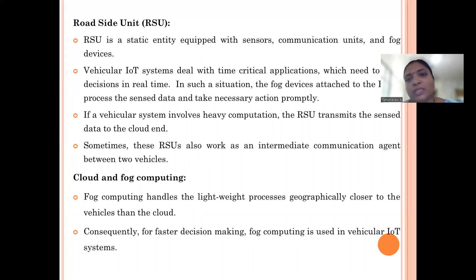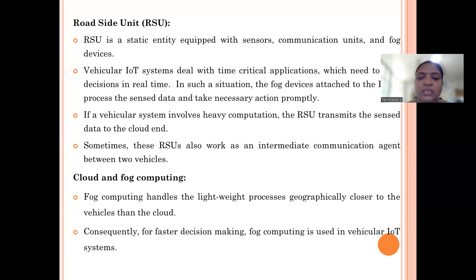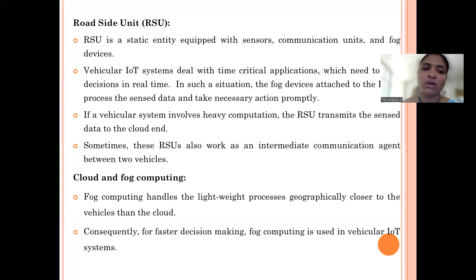The roadside unit is a static entity equipped with sensors, a communication unit, and fog devices. It deals with time-critical applications where decisions need to be made in real time. Fog devices attached to the roadside unit process sensitive data and take necessary action immediately for real-time critical applications. If the system involves heavy computation, the roadside unit can transmit data to the cloud for processing and decision making. So data from the sensor is sent to the roadside unit and then routed to either fog or cloud devices.